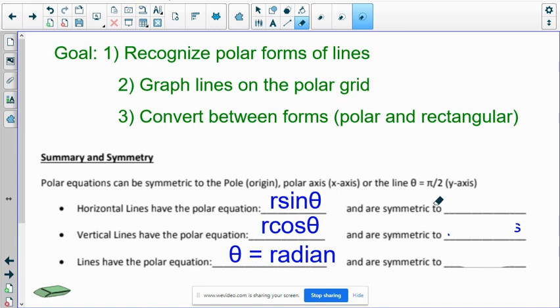The y axis is the pi over two axis. And the pole is the origin. So horizontal lines are actually symmetrical to the pi over two axis.